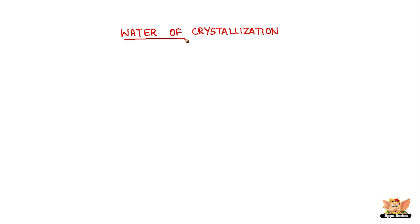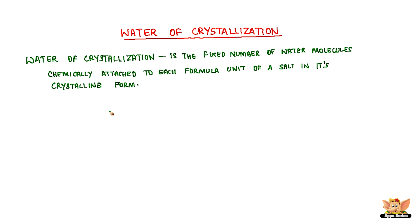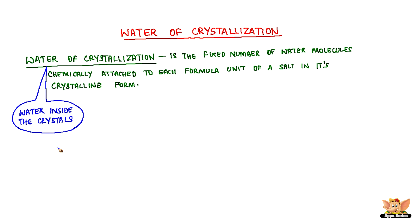Water of crystallization is the fixed number of water molecules chemically attached to each formula unit of a salt in its crystalline form. It is the water that is inside the crystals during crystal formation. When this water is removed by heating, the crystal property of the salt is lost and is regained when it gets moist.